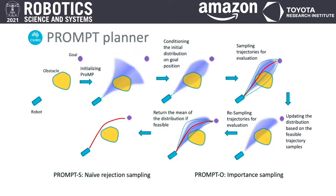The progression of the planning steps is shown from left to right in a cyclical fashion. The motion primitive distribution is first conditioned on the goal or waypoint position. The trajectories are then sampled from this conditional distribution to perform feasibility evaluation. Infeasible samples are discarded and the underlying distribution updated to best represent the feasible trajectories. This step is performed iteratively until the mean of the distribution is a feasible trajectory. Choosing the mean over the first successful sample trajectory to execute shows better robustness during execution. More details of the approach with detailed discussions on sampling strategies are given in the paper.